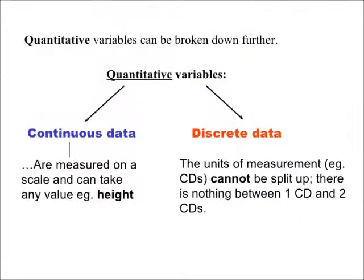We can further classify quantitative variables into two types. A discrete variable is a quantitative variable that has either a finite number of possible values or a countable number of possible values. The term countable means that the values result from counting.